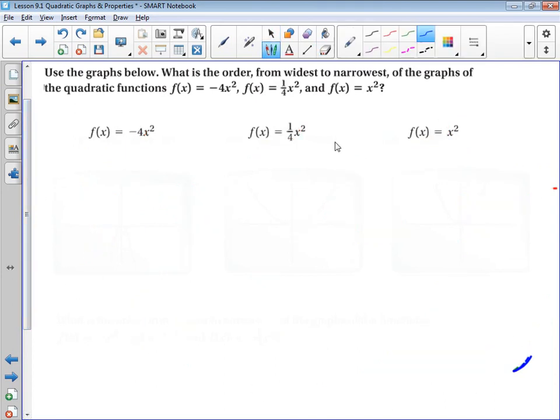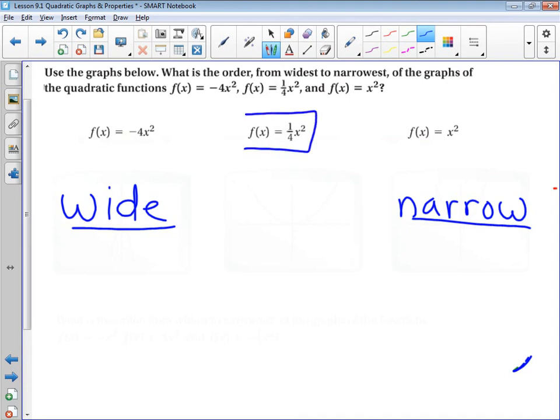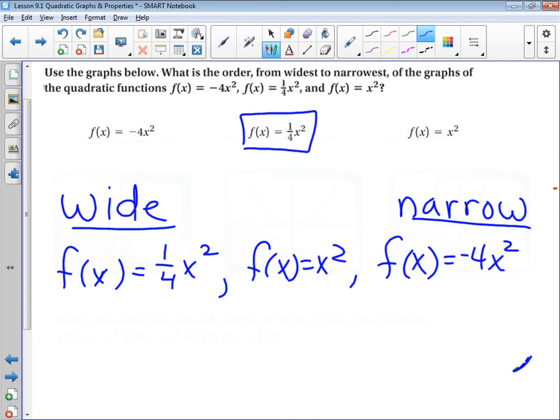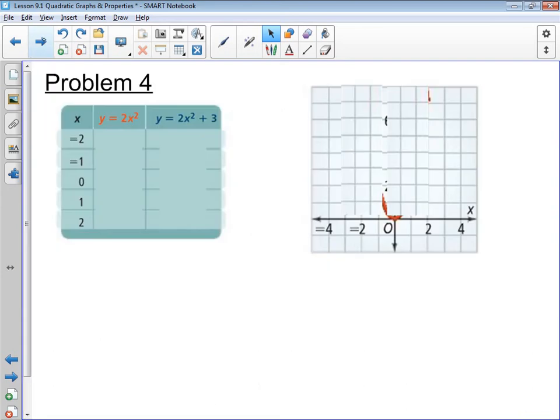So, the directions on this problem is to put them in order from widest to narrowest. So, the widest function is the one with the smallest coefficient. So, this is the widest. The next widest is the one with just x squared. And the skinniest was, even though it opened downward, was the one with the four in front of it.